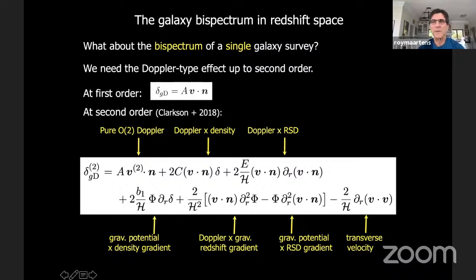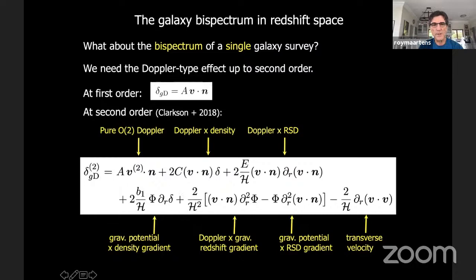Moving from the power spectrum to the galaxy bispectrum. To look at the galaxy bispectrum at tree level, we have to go beyond first order up to second order in the number density contrast. At first order, we have the relativistic correction delta_G^D — where D stands for Doppler type — which is A times v·n. The second order result was worked out in our 2018 paper and subsequently by others, though it can be found buried in some earlier papers by Jael and others. We explicitly isolated this term in 2018 for the first time.